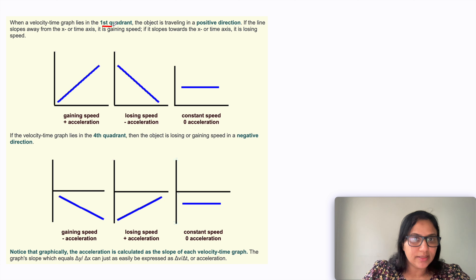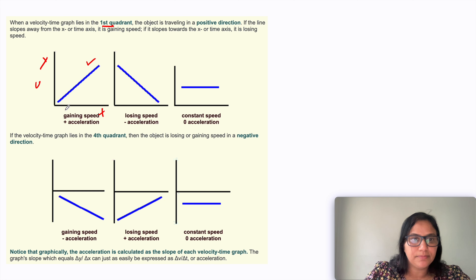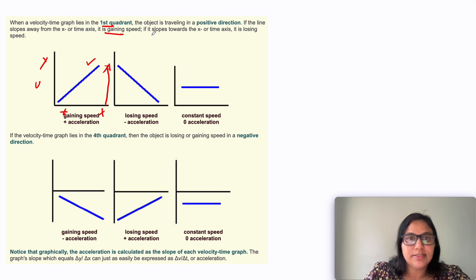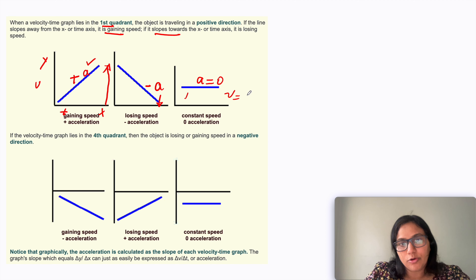When a velocity-time graph lies in the first quadrant, the object is traveling in a positive direction. If the line slopes away from the x-axis (the time axis), the object is gaining speed — it accelerates in a positive direction. If the line slopes towards the x-axis, the object is losing speed, which is a negative acceleration. If the line is parallel to the x-axis, the acceleration is zero and the object is moving with constant velocity.